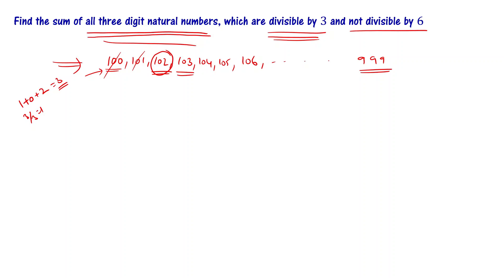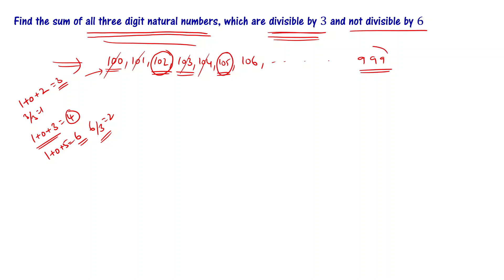103 is not divisible because 1+0+3 = 4, and 4 is not divisible by 3. 104 is also not divisible. 105 is divisible because 1+0+5 = 6, and 6 divided by 3 is 2, so 105 is divisible by 3. Similarly, 9+9+9 = 27, and 27 divided by 3 is 9, so 999 is also divisible by 3.